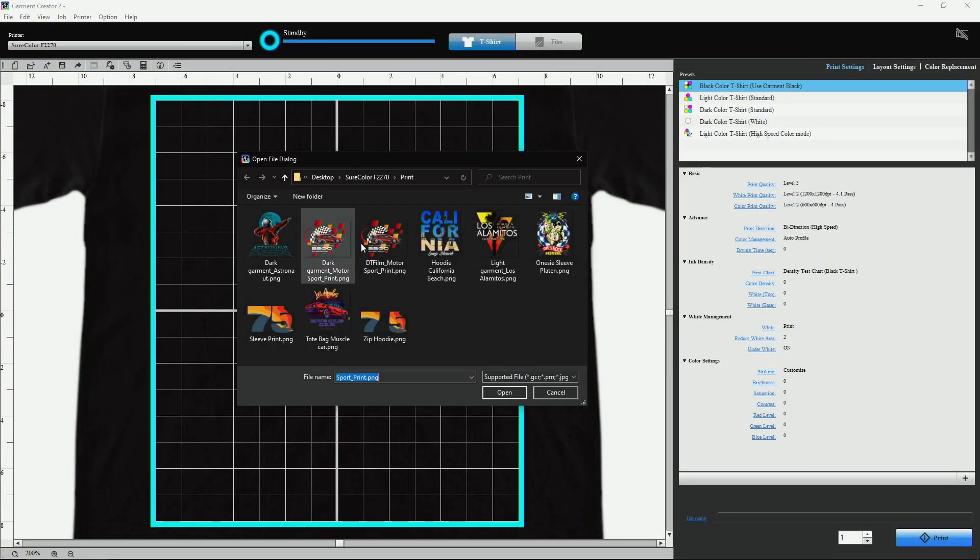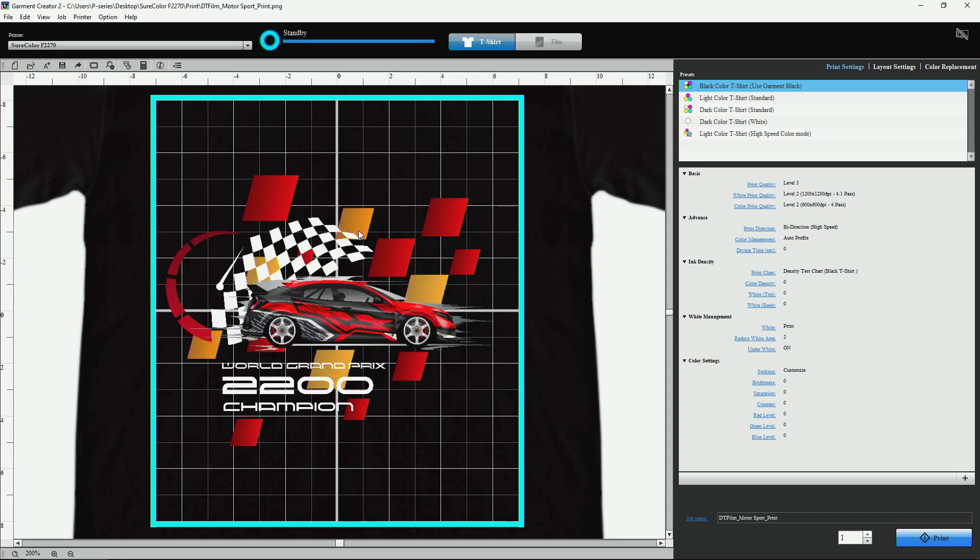In Garment Creator, open the design that you'd like to print. At the top of your screen, switch to the Film Mode.